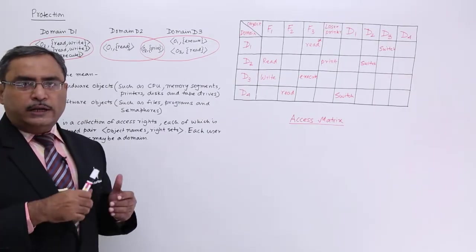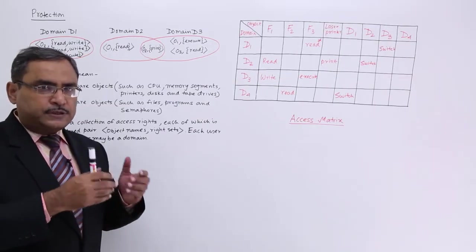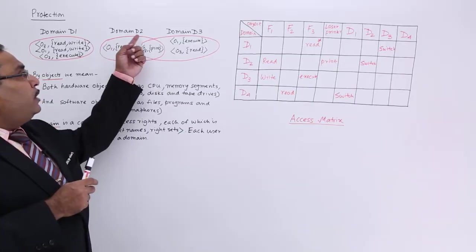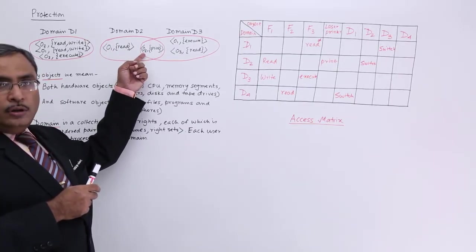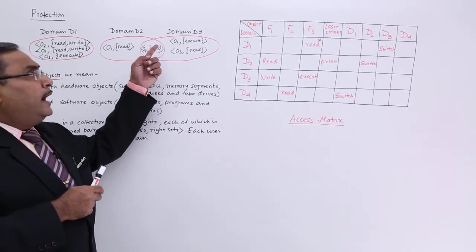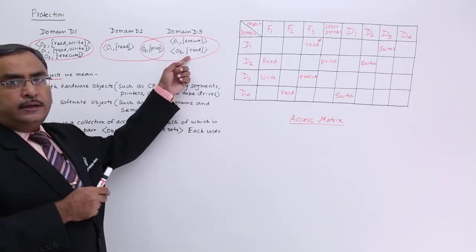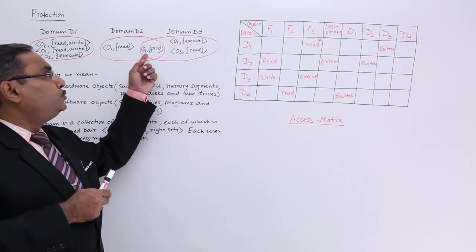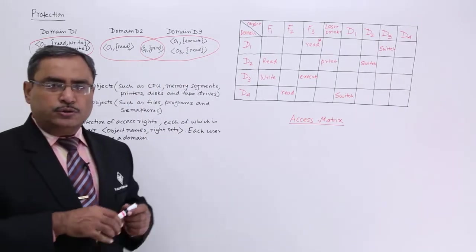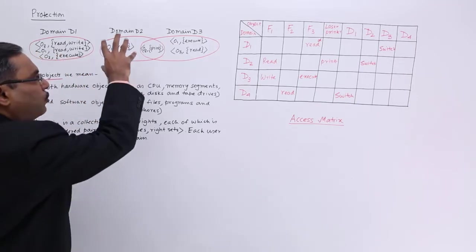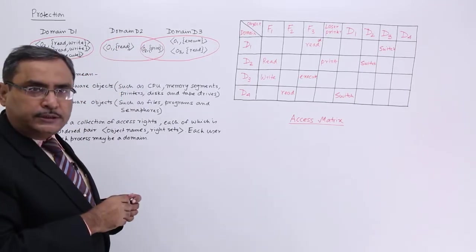That means, if one user finds himself or herself in this particular D2 can also go for object to print and another user in D3 can go for object to print operation. So, this is known as the concept of domain, concept of object and so on.